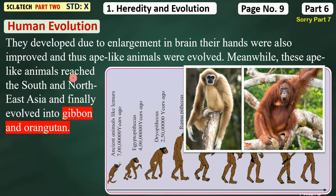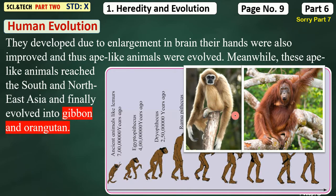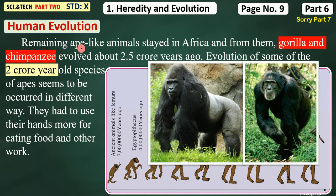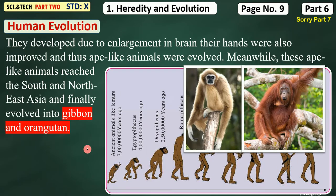These ape-like animals reached South and North-East Asia — the Asian continent — and also remained in Africa. Finally, those that migrated to Asia evolved into gibbon and orangutan. This is gibbon and this is orangutan. They don't have a tail; they are apes.